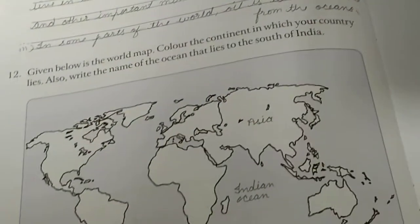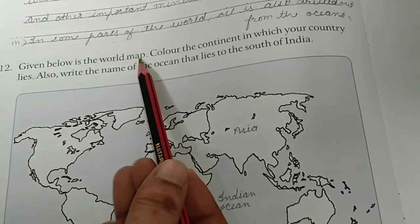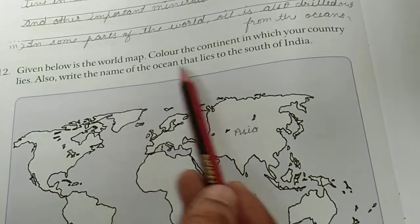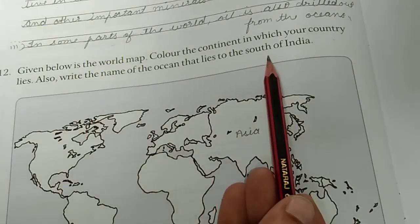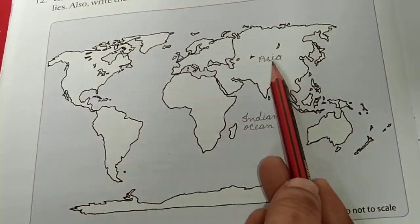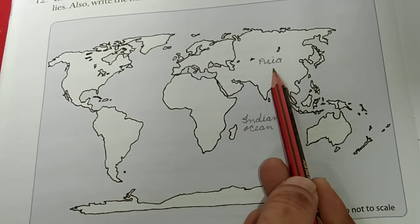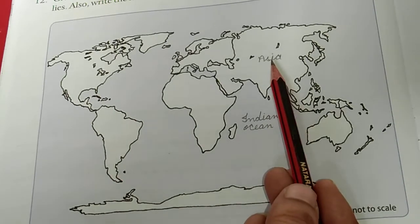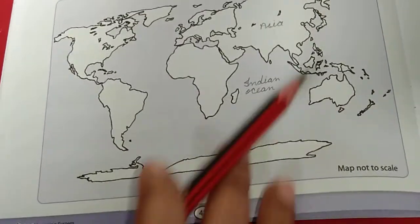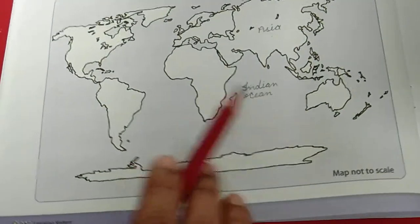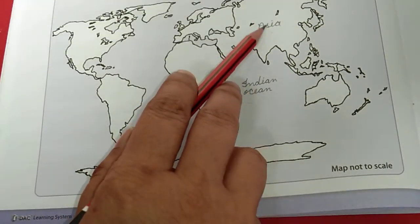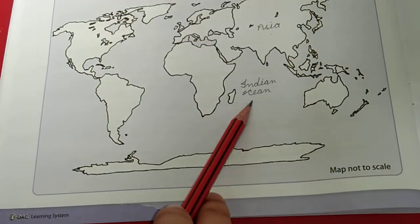Question number 12: given below is the world map — color the continent in which your country lies, and write the name of the ocean that lies to the south of India. In the map, write Asia for the continent. And the ocean asked — to the south of India — is the Indian Ocean. This ocean is named after India itself. So write Asia, and the ocean is Indian Ocean.